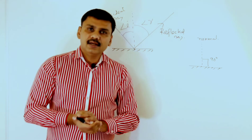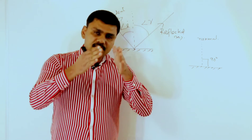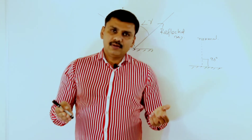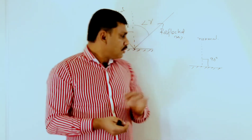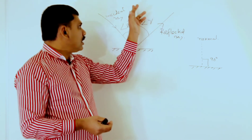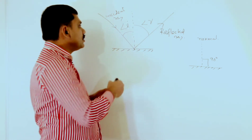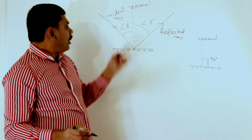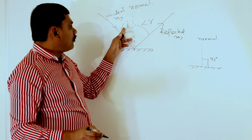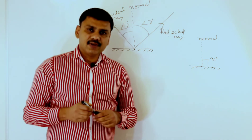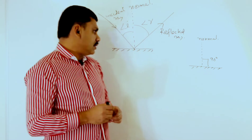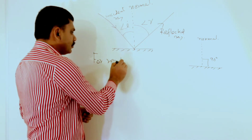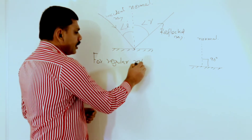To summarize: the normal is an imaginary line 90 degrees to the surface, and you can draw infinite normals on a surface. We have the incident ray, the reflected ray, and the imaginary line known as the normal. From these, we mark the angle of incidence and the angle of reflection. This applies in the case of regular reflection.